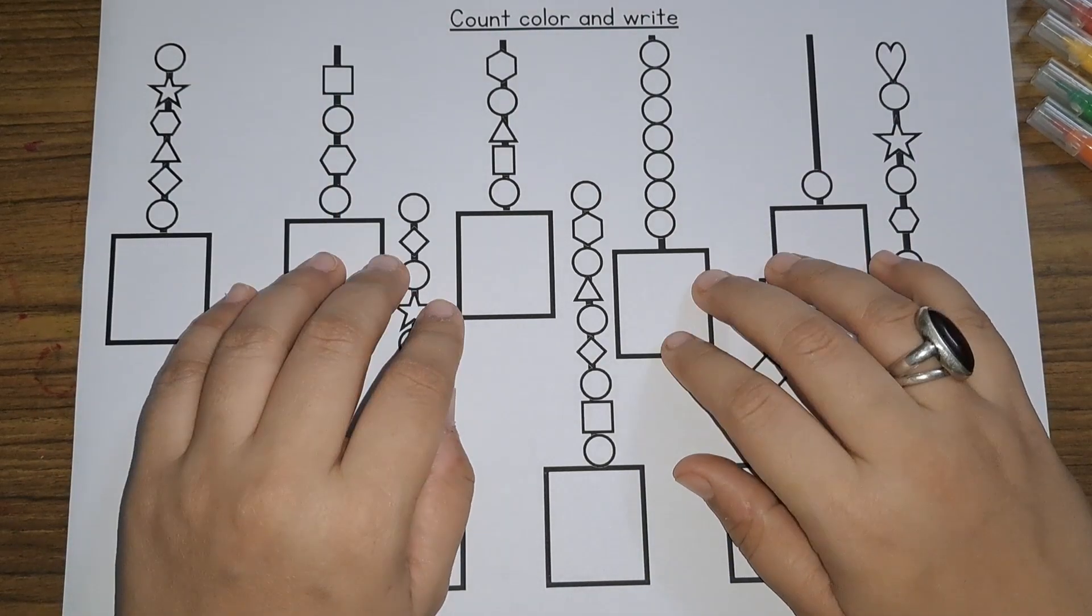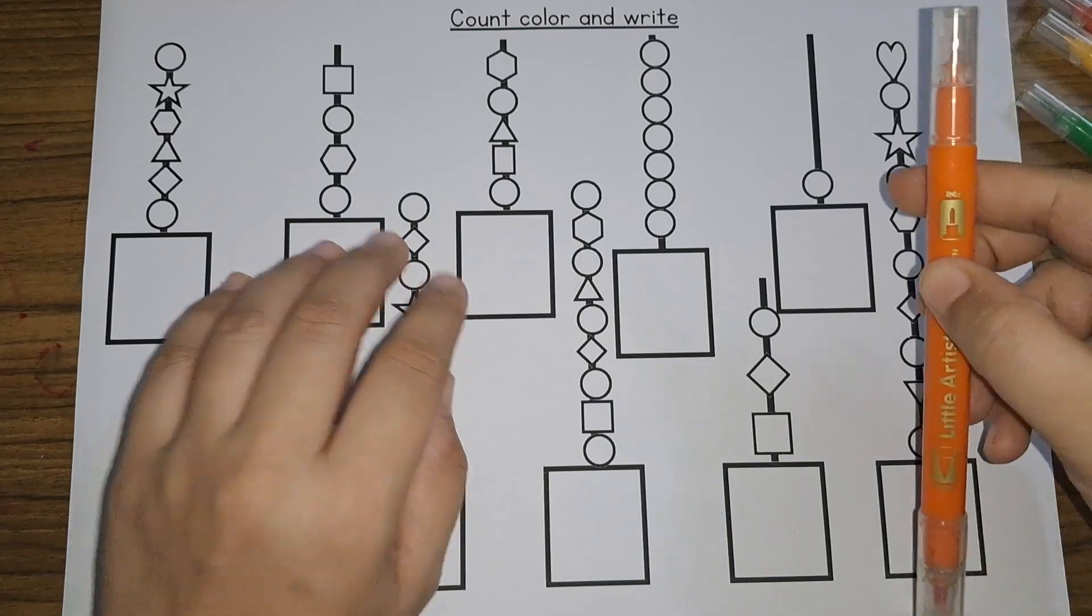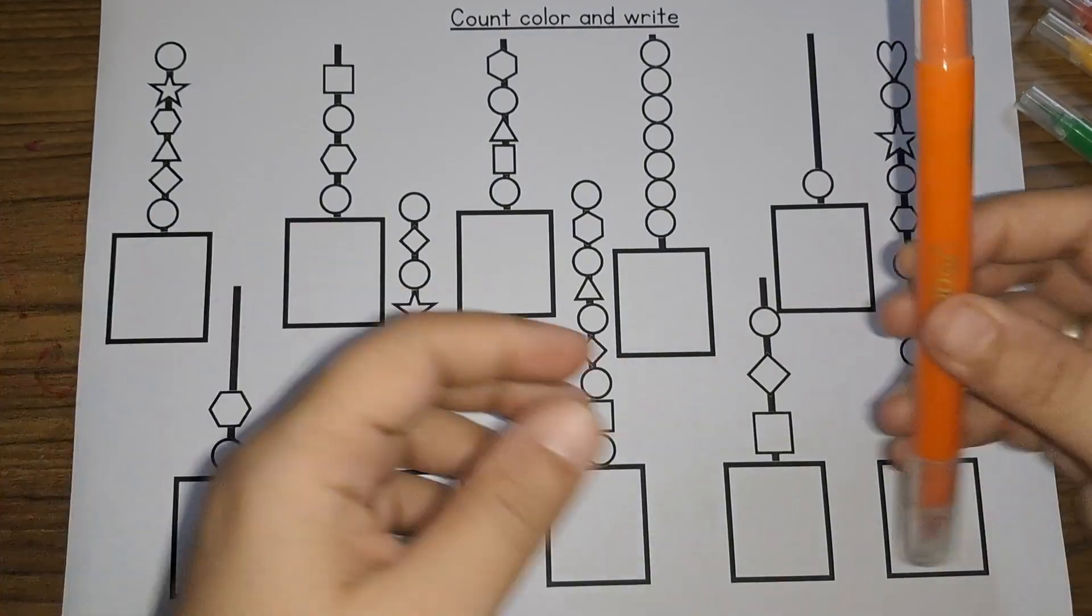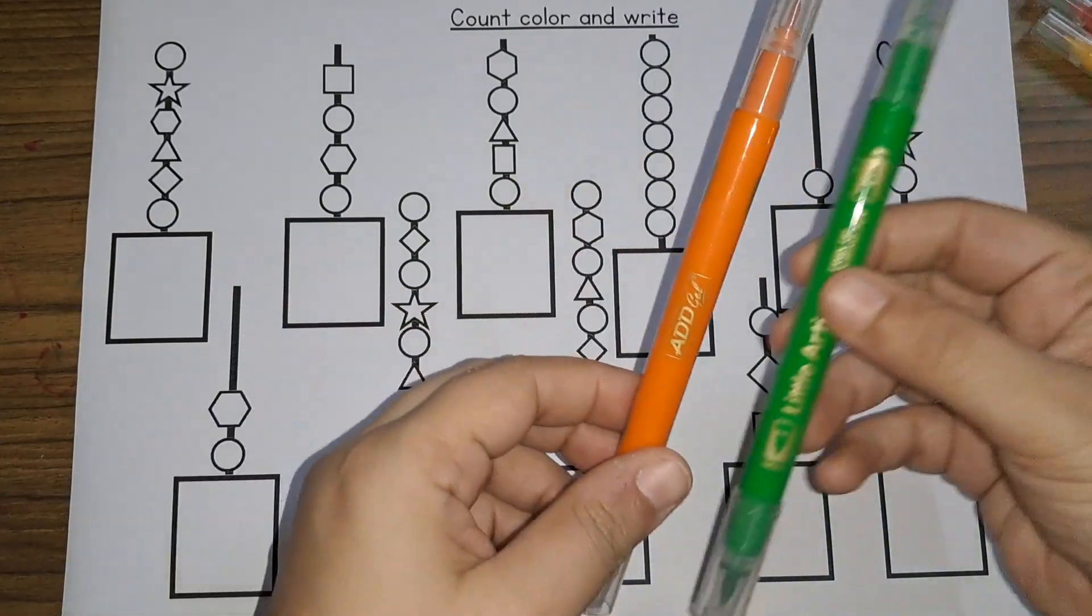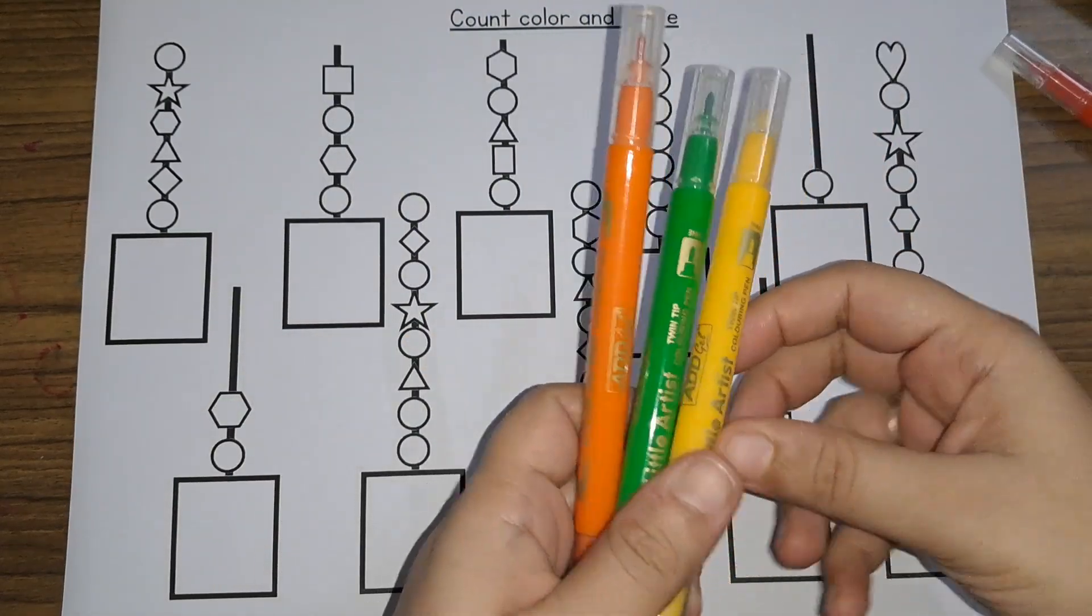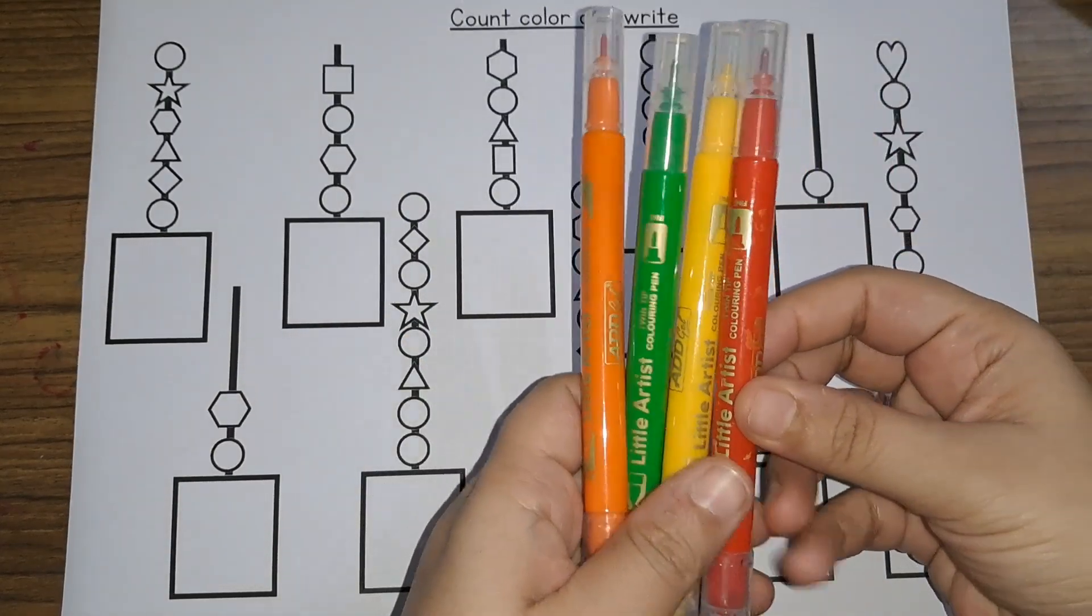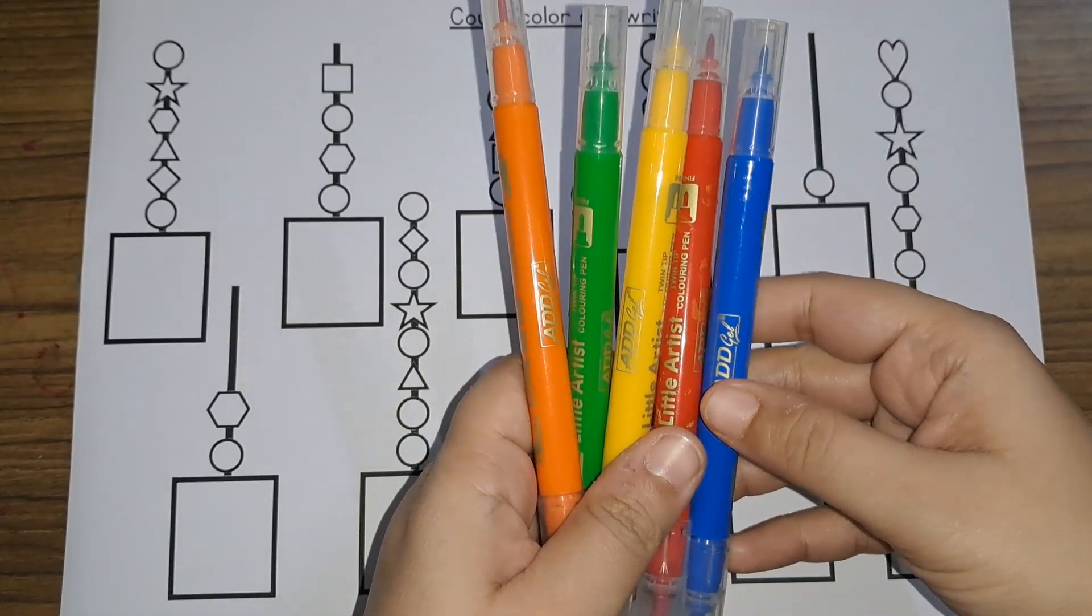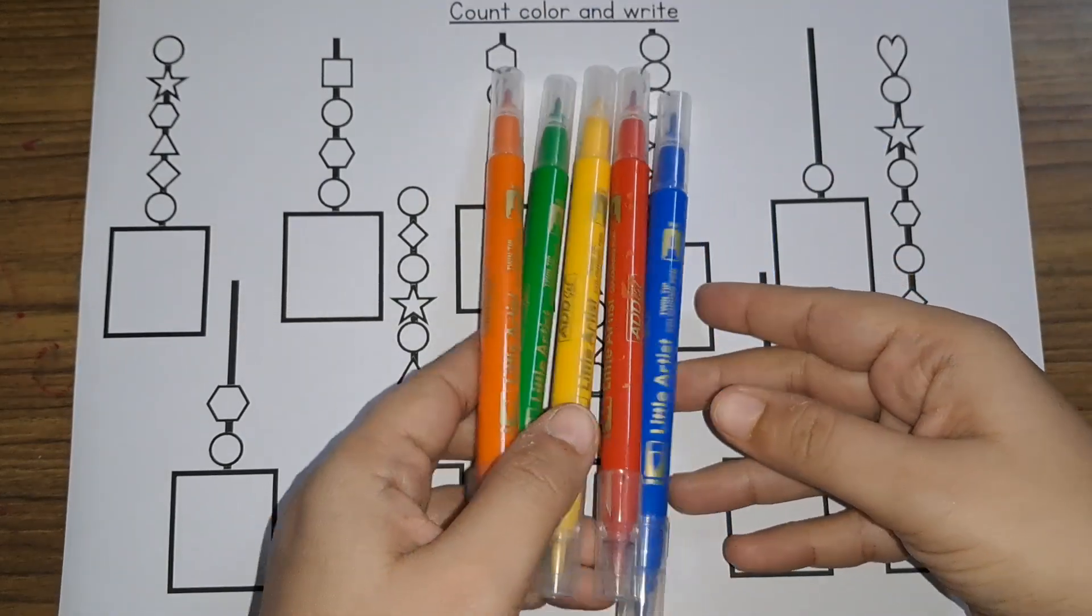First let us see the colors. Orange color, green color, yellow color, red color and blue color. These are the colors.